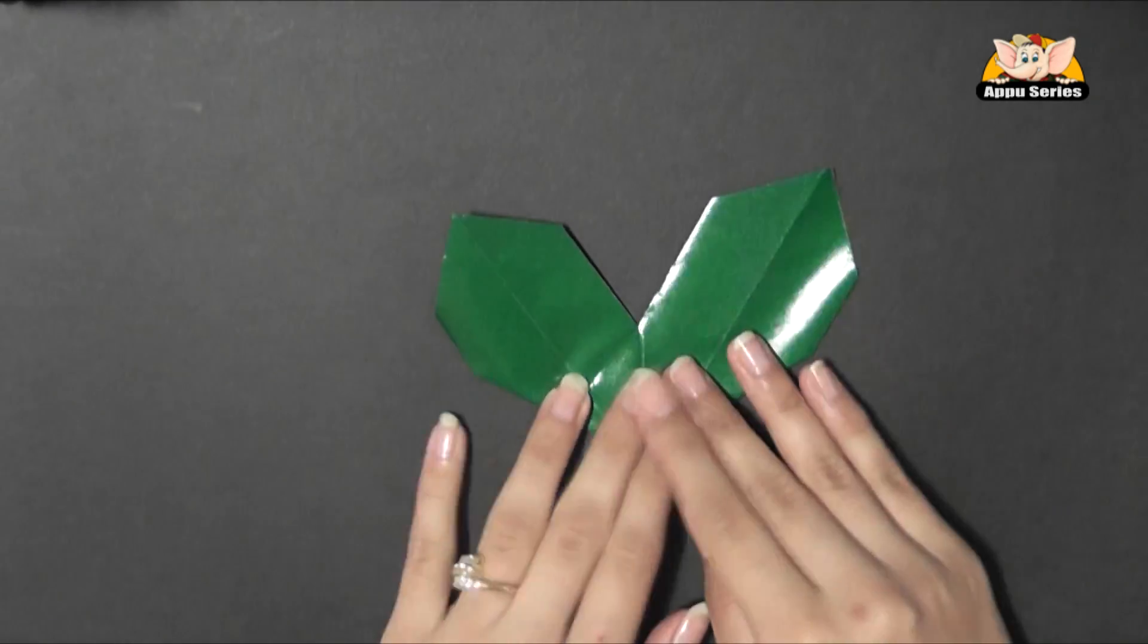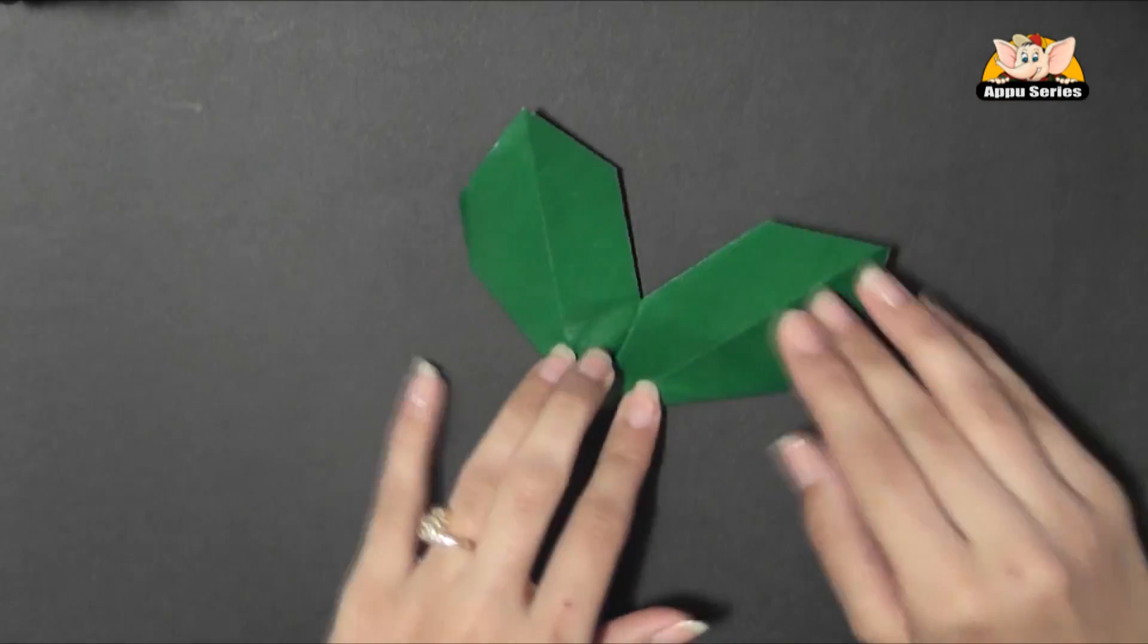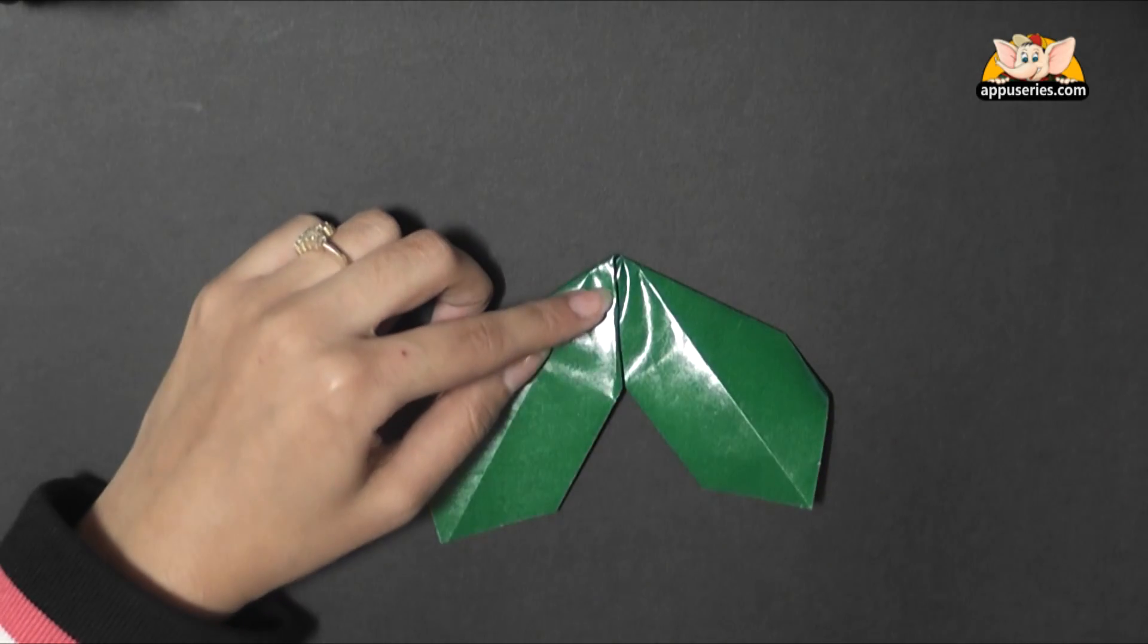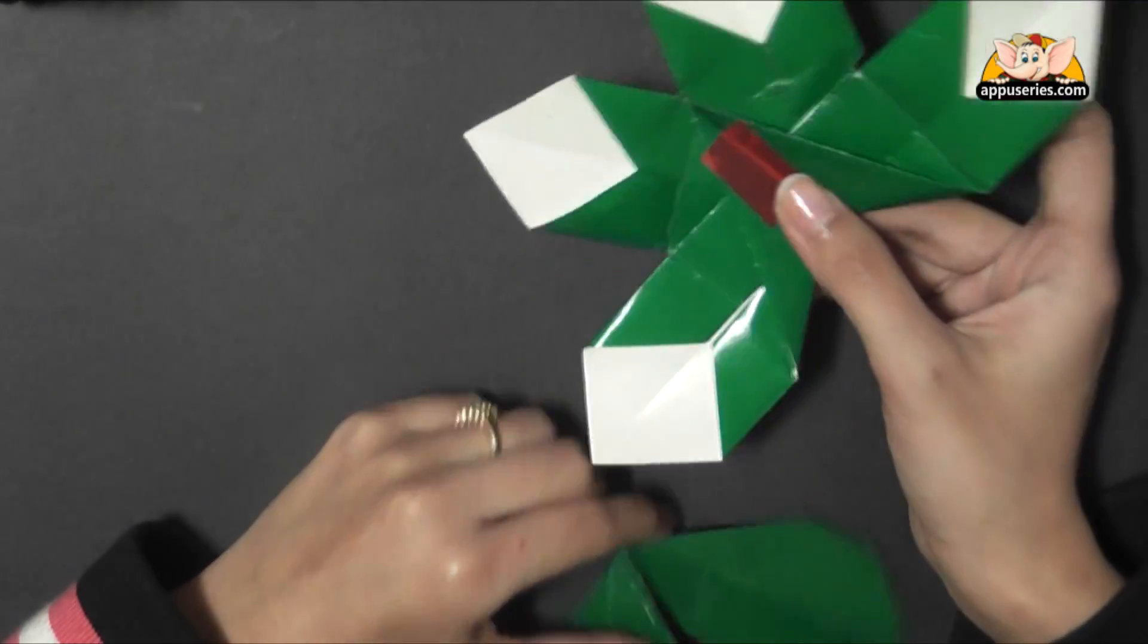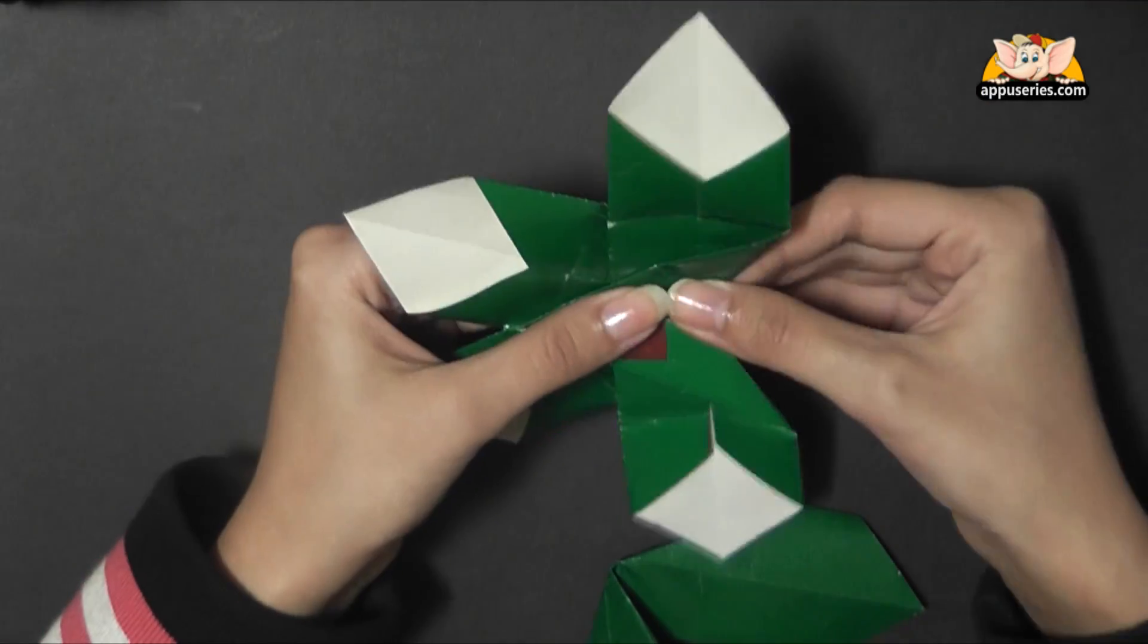You can adjust this so that you get even leaves on either side. Now we need to make two more of this kind, which I have done here. And I have just pasted them together from behind.